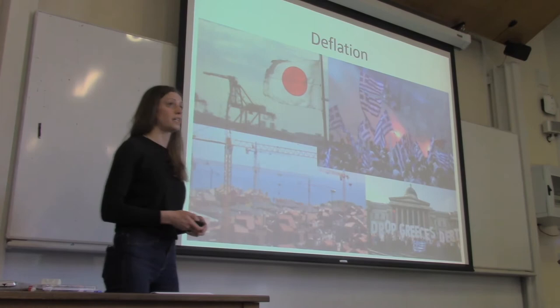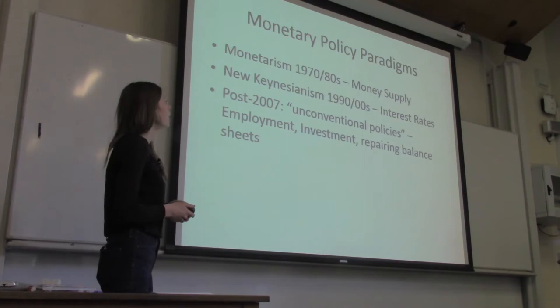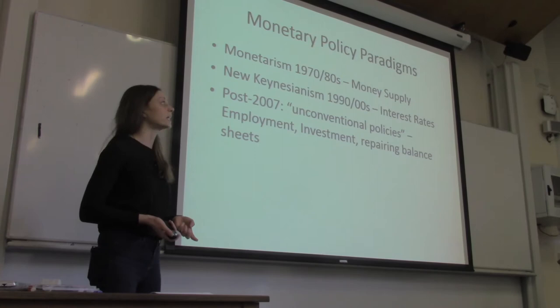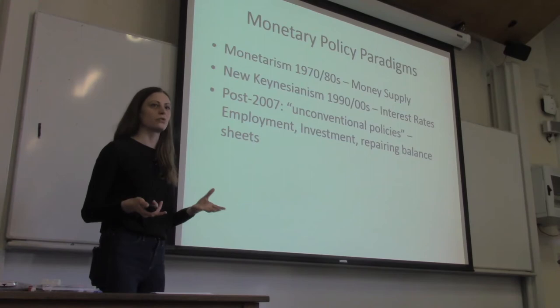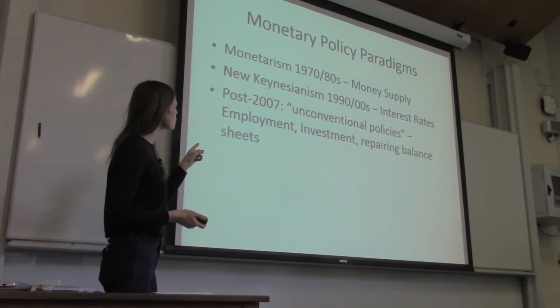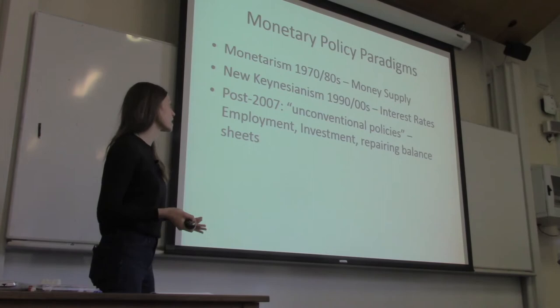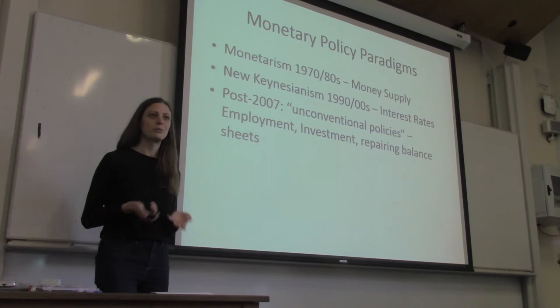Those are the monetary policy paradigms of the recent past. It started with monetarism in the 1970s and 80s — that was what central banks followed. Then from the 1990s to 2000s, new Keynesianism started to dominate central banking. Both monetarism and new Keynesianism agree on the goal of reducing inflation — they just disagree on how to do it. Post-2007, we entered an era of unconventional monetary policies: the Bank of England governor started talking about employment, QE, forcing investment, and repairing balance sheets.